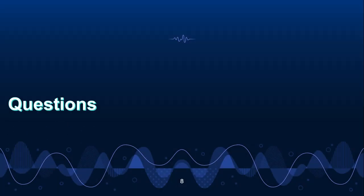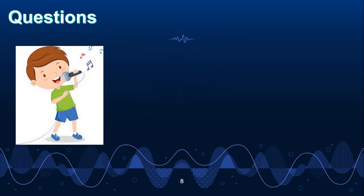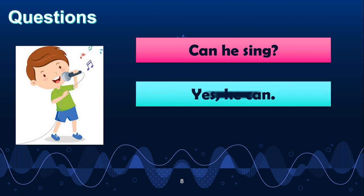Now let's look at how to ask questions. Look at the picture. What is the boy doing? Yes, the boy is singing. So the question should be: can he sing? When you want to ask a question, you will put can at the front. Can he sing? Look at the picture — yes, he can sing. So the answer will be: yes, he can.